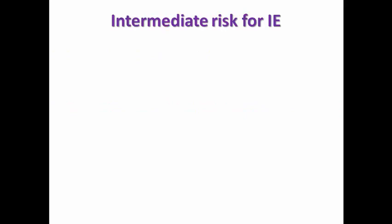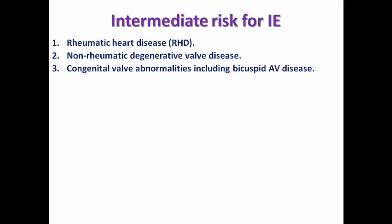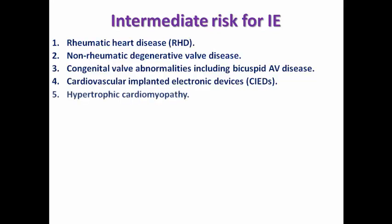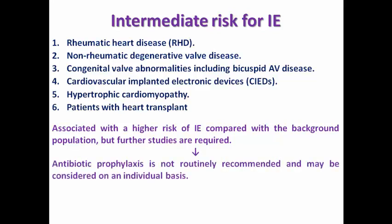The intermediate-risk group includes those with rheumatic heart disease; non-rheumatic degenerative valve disease like mitral valve prolapse or flail leaflets; congenital valve abnormalities like bicuspid aortic valve; and those with cardiovascular implantable electronic devices including all types of pacemakers, CRT, and ICDs. Also included are patients with hypertrophic cardiomyopathy and those with heart transplant. These patients have a higher risk of infective endocarditis compared with the background population, but antibiotic prophylaxis is not routinely recommended — it may be considered on an individual basis according to local hospital protocol.